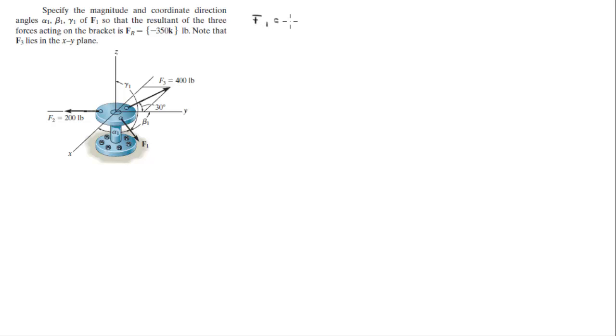First we're trying to find F1 with the X component plus the Y component plus the Z component. Let's find F2, just break it down. F2 is easy: 0 in the i minus 200 in the j because it's going to the negative Y axis, plus 0 in the k.